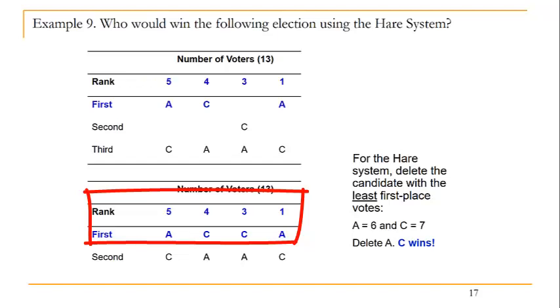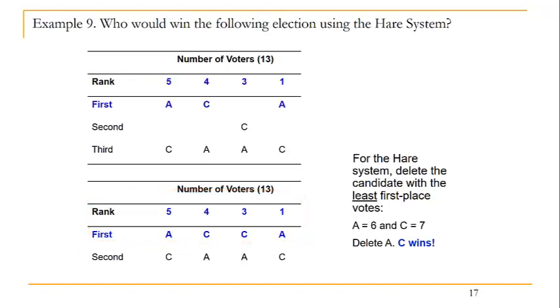Since candidate C is the only candidate remaining, we say that candidate C wins this election using the HAIR system.